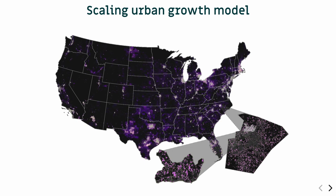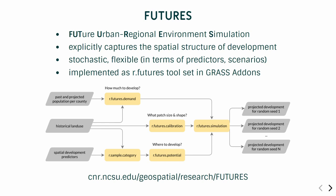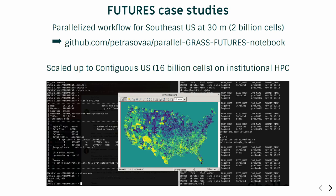Now about the application I was using these techniques on. We are computing an urban growth model for the contiguous United States using a model called Futures, implemented in GRASS GIS as a set of tools — a whole GIS workflow with data preprocessing. There is a notebook for a parallelized workflow for a smaller part of the US, which is still 2 billion cells. The actual full case study is 16 billion cells, and we run this on our institutional HPC.